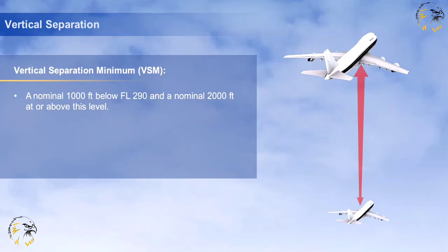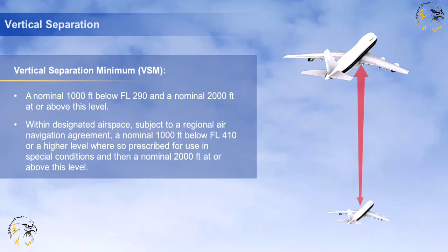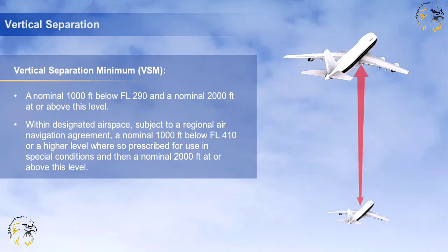Within designated airspace subject to a regional air navigation agreement, a nominal 1,000 feet applies below flight level 410, or a higher level where so prescribed for use in special conditions, and then a nominal 2,000 feet at or above this level.